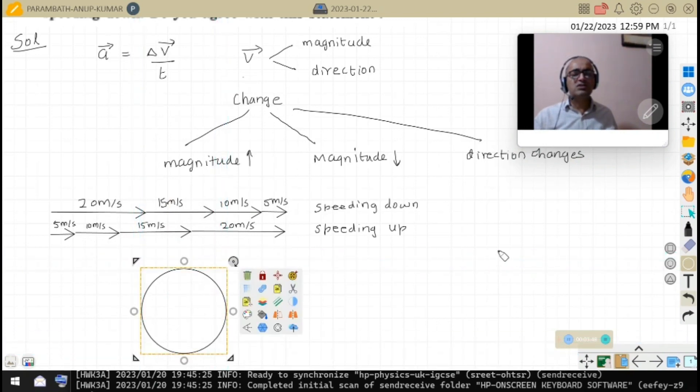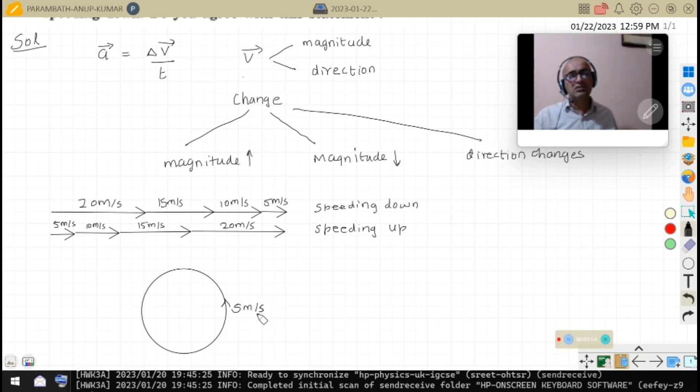The body is moving with constant speed, say 5 meters per second. But because its direction is changing every moment, we say that it is undergoing acceleration.